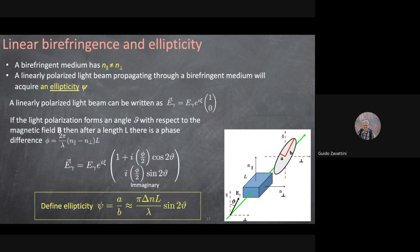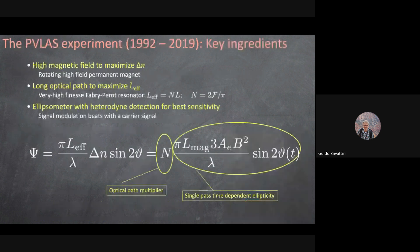The ratio of the minor to major axis of that ellipse is the ellipticity. The formula for ellipticity is: ψ = (Δn · L · π / λ) · sin(2θ), where Δn is the birefringence, L the medium length, λ the wavelength, and θ the angle between the polarization and the optical axis. To maximize the measured ellipticity you want to maximize the length L, minimize λ (though practical constraints favor visible light), and maximize B²·L, which is determined by the external magnetic field.